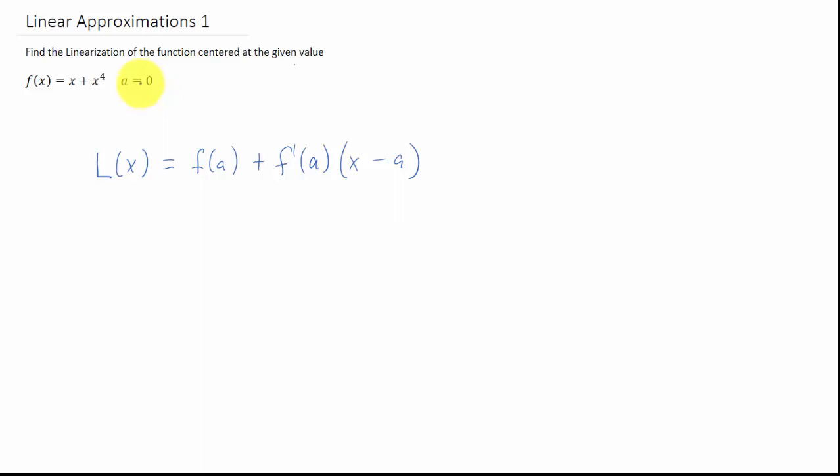Now, a linearization or a linear approximation is just a tangent line. Of course, we're in calculus now, so we use fancier notation. But this is just a slope right here. f prime of a is the slope of the tangent line. This is just x minus the x value that's given, and this is the y value given. So this really just looks a lot like point slope form.